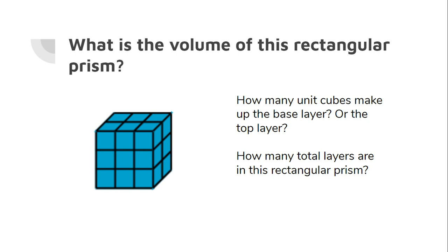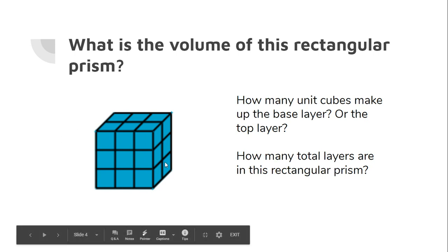Now look at this rectangular prism. How many unit cubes make up the base layer or the top layer? Can we look at the sides, can we look at the top to determine how many are in a layer and how many layers comprise that rectangular prism? So I can't really see the bottom layer, but I can see this top really well.